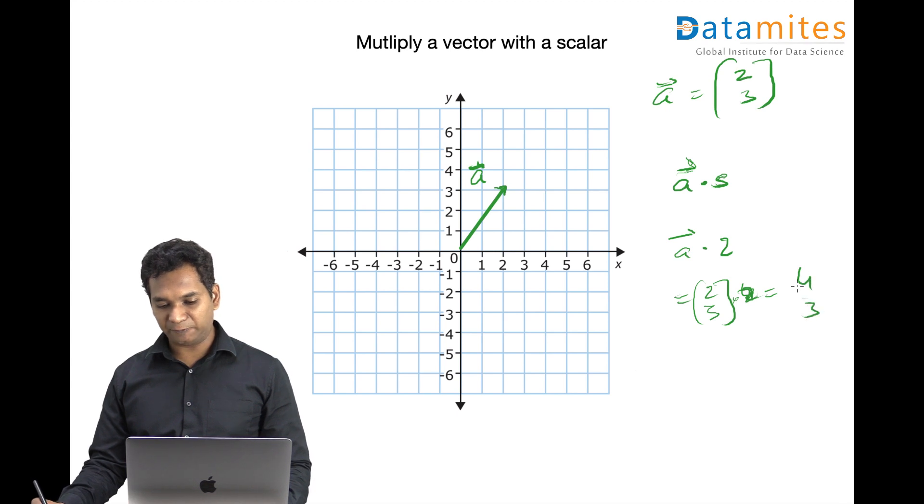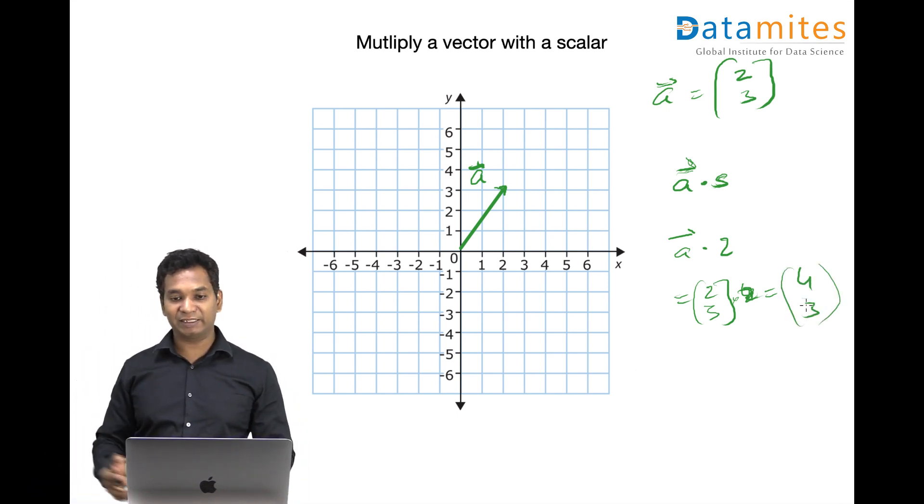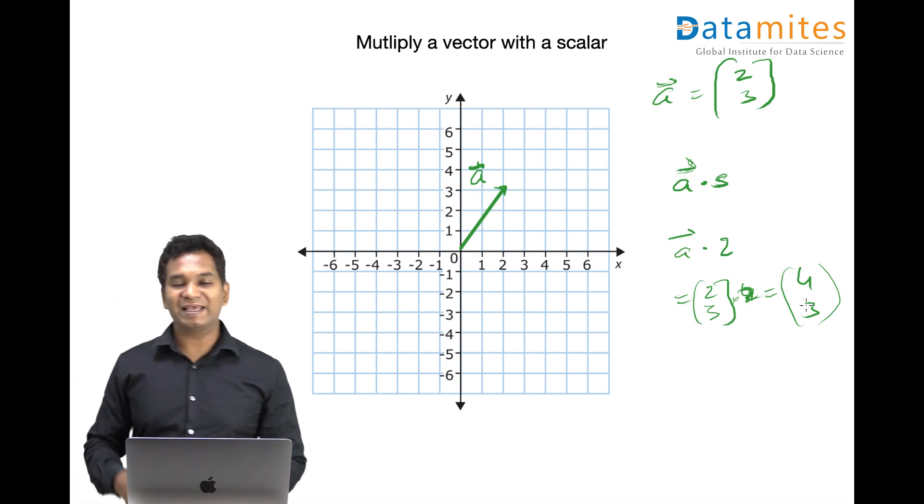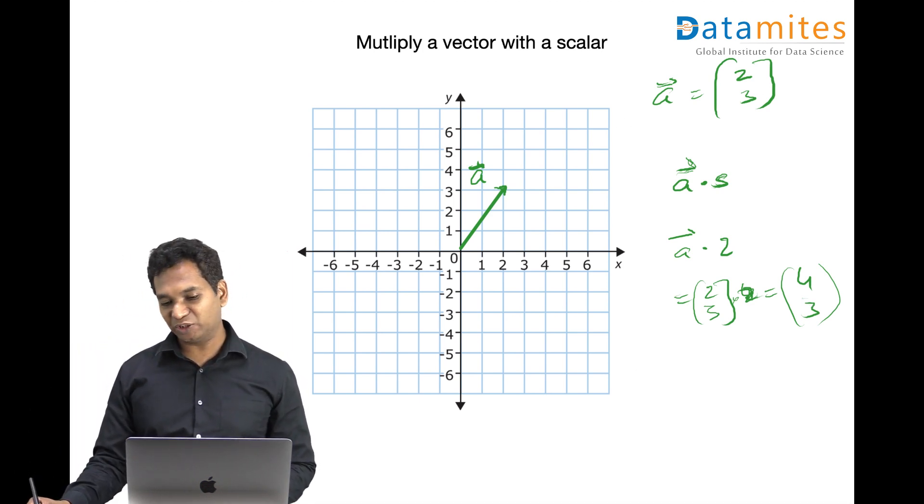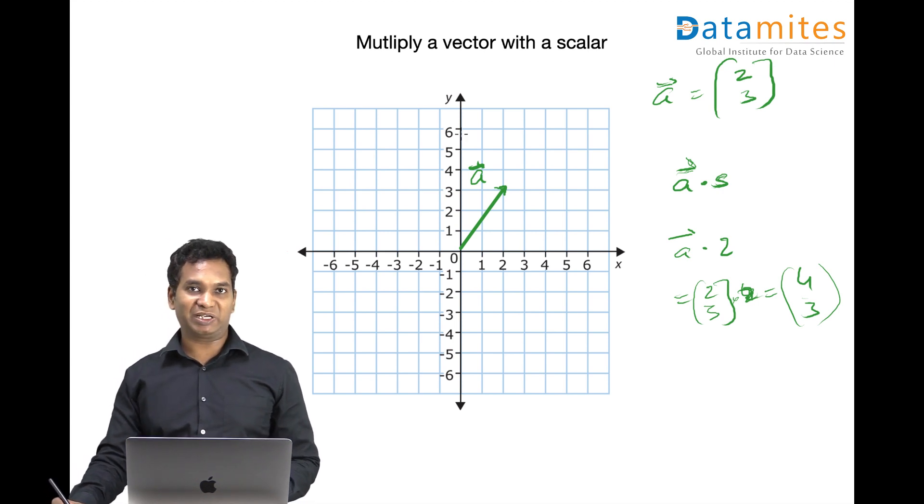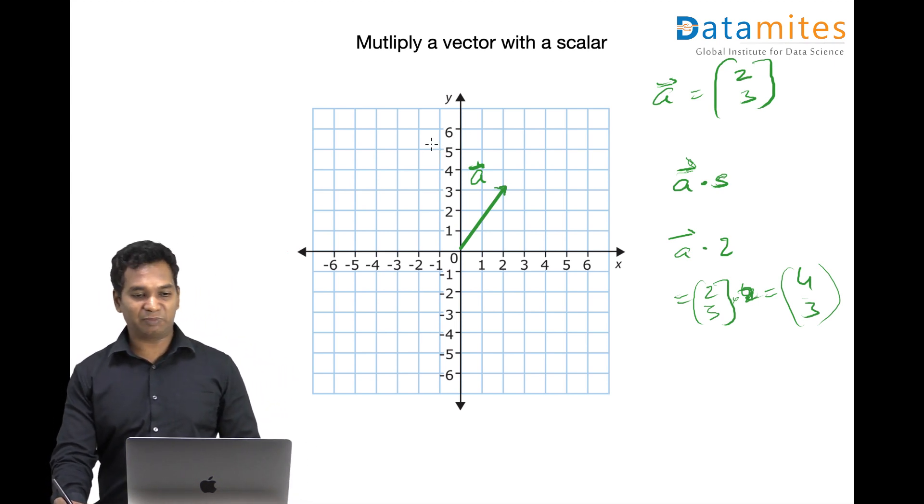You might be wondering why I'm specifically putting it on the right side. Why can't I multiply a scalar with the vector? Well, that's not conventional. Though it looks pretty similar, conventionally it's not correct.